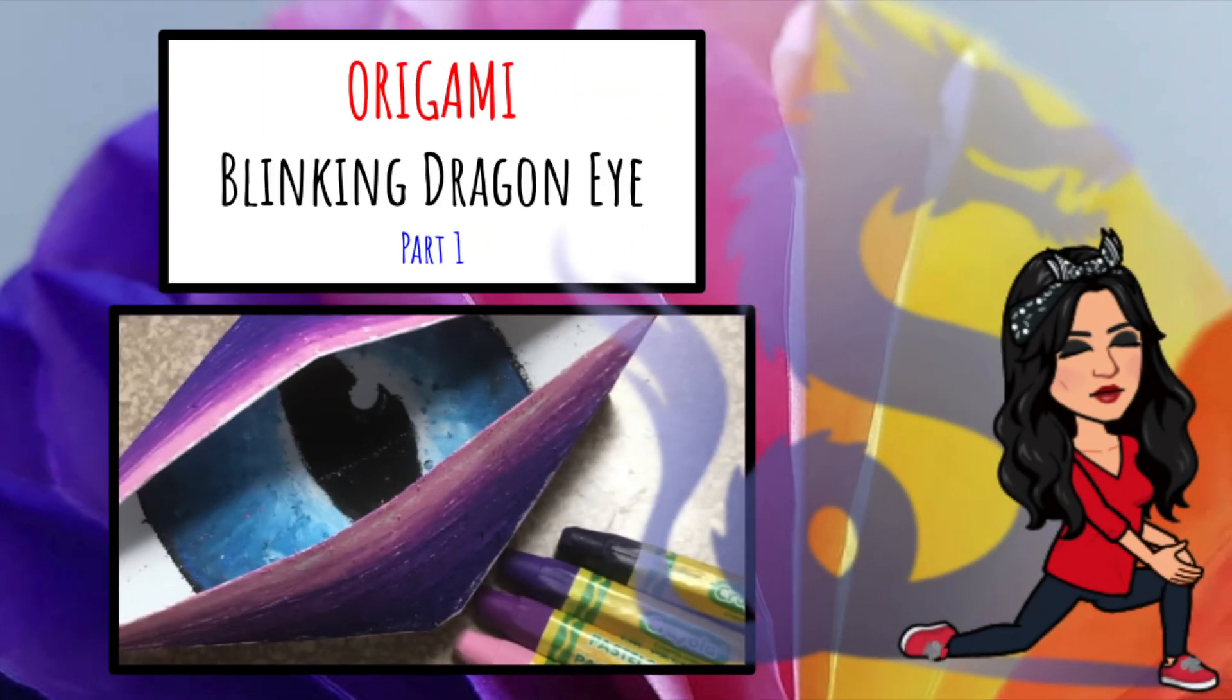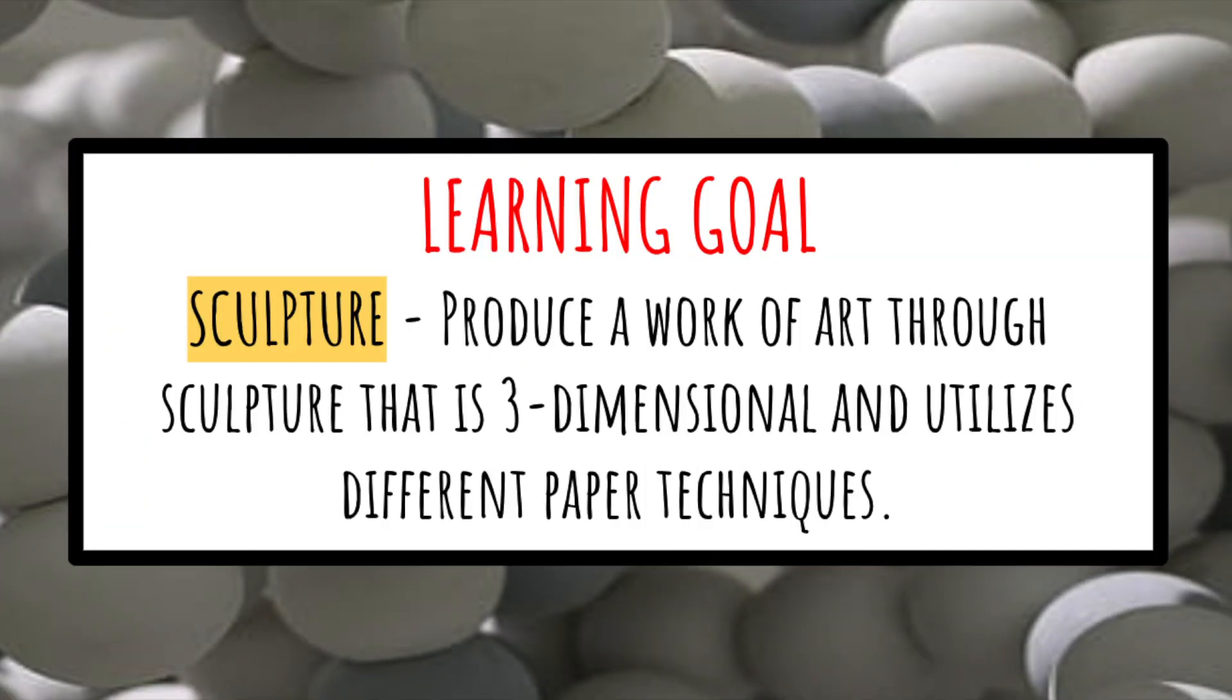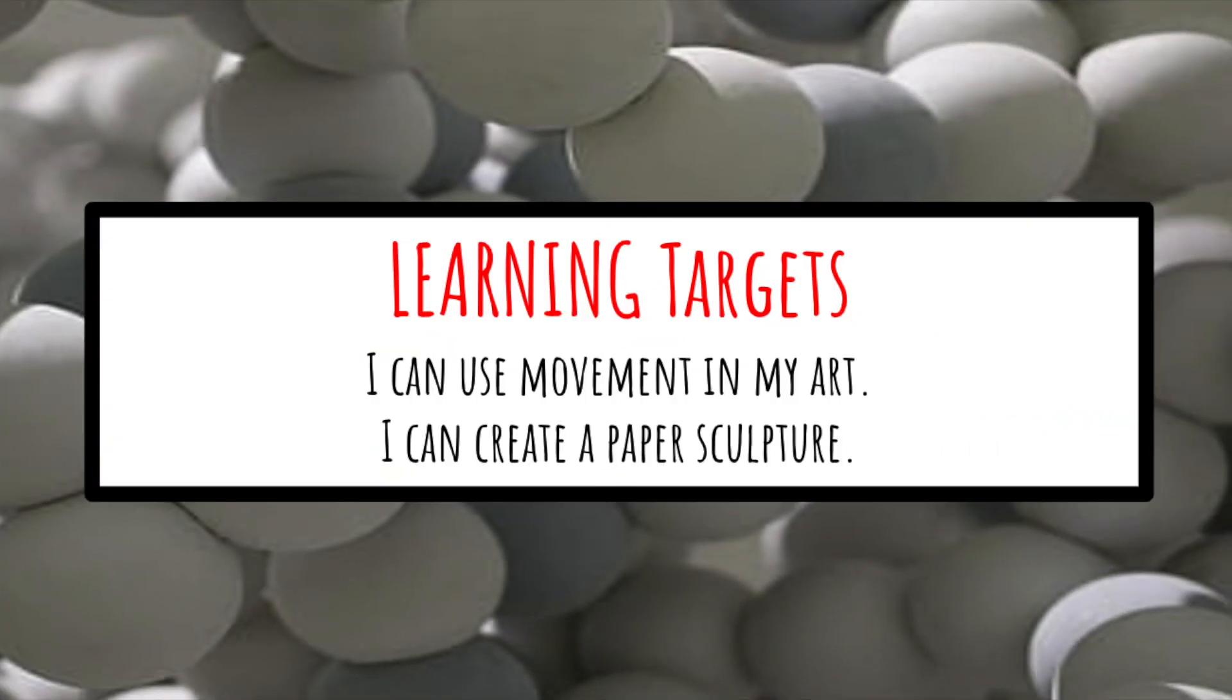Which brings us to our next project, which is an origami blinking dragon eye. This is part one. Our learning goal is sculpture - to produce a work of art through sculpture that is three-dimensional and utilizes different paper techniques. Our learning targets for this project are: I can use movement in my art, and I can create a paper sculpture.